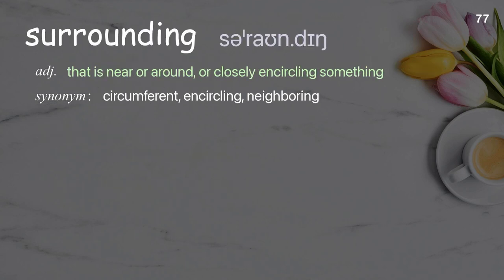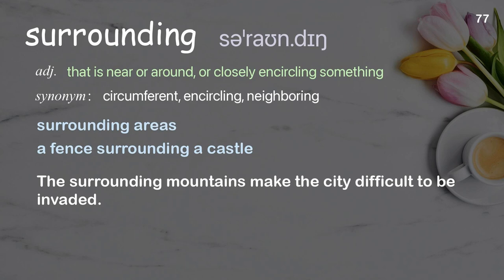Surrounding. That is near or around, or closely encircling something. Examples: surrounding areas, a fence surrounding a castle. The surrounding mountains make the city difficult to be invaded.